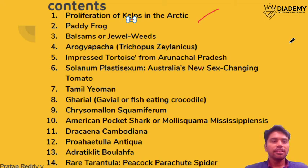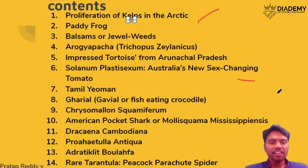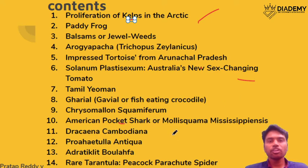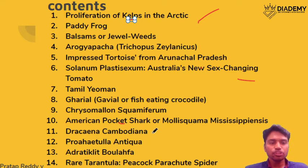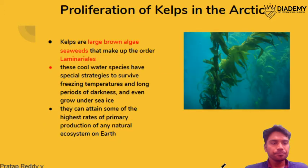Topics include: the paddy frog, balsams or jewel weeds, Ayuragya pakka, the impressive tortoise from Arunachal Pradesh, Solennum plastisexum, the Tamil Yeoman butterfly, gharial — the fish-eating crocodile — Chrysomelon squamiferum, the American pocket shark, Dracaena cambodiana, Prohetulla antiqua, Andhra thicklip, and finally the peacock parachute spider.